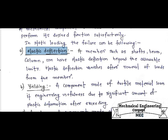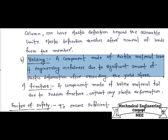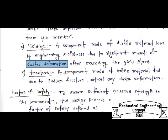The second type of failure is yielding failure. A component made of a ductile material loses its engineering usefulness due to a significant amount of plastic deformation when the yield stress is exceeded. Whenever a ductile material component under static loading exceeds its yield stress, the component loses significance due to plastic deformation — this is known as yielding failure, and it is due to plastic deformation.